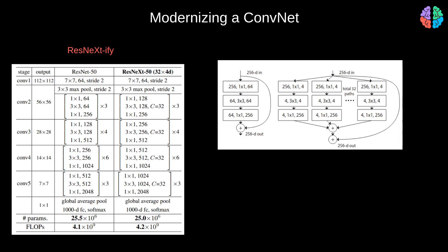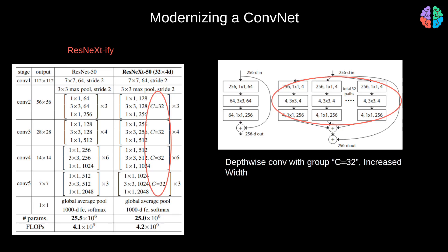Comparing ResNet-50 and ResNeXt-50: ResNeXt introduces groups (C=32) and compensates the loss of parameters by increasing width, achieving better accuracy. They use depthwise convolutions, a special type of group convolutions, also inspired by the success of MobileNets. Inspired by Swin Transformer, they increased the width from 64 to 96, bumping accuracy up to 80.5 from 79.4.